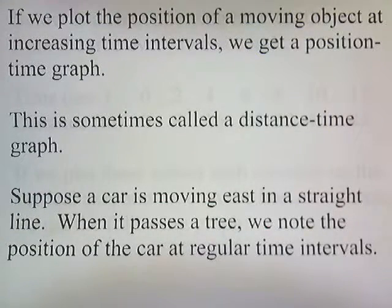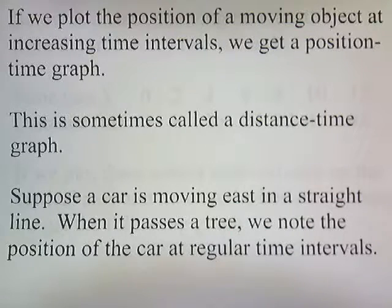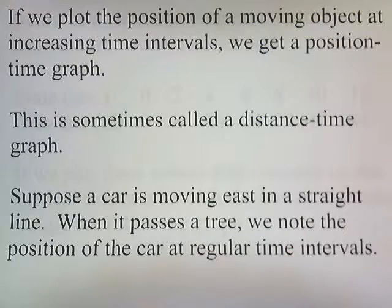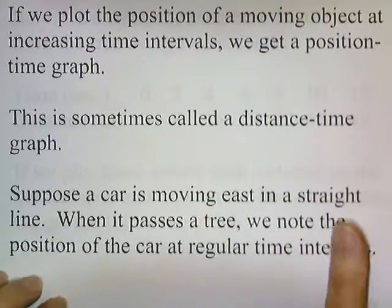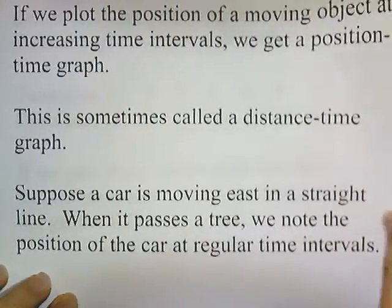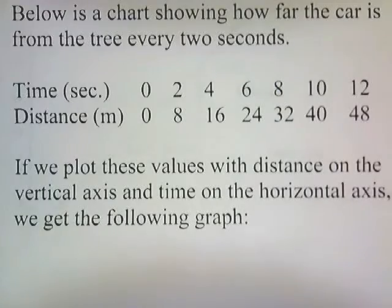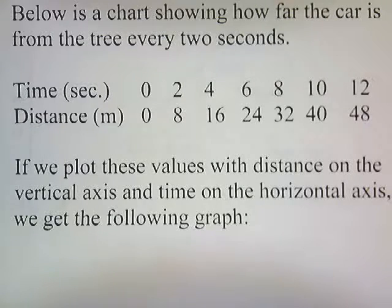If we plot the position of a moving object at increasing time intervals, we get a position-time graph. This is sometimes called the distance-time graph. Now suppose a car is moving east in a straight line. When it passes a tree, we know the position of the car at regular time intervals. Below is a chart showing how far the car is from the tree every two seconds.